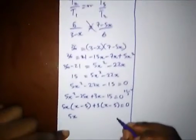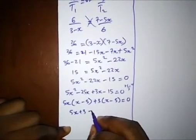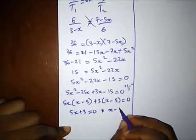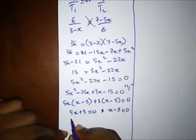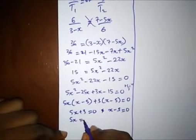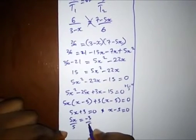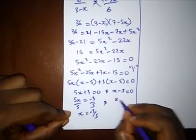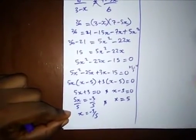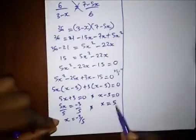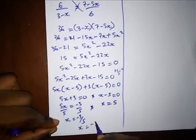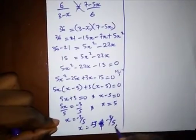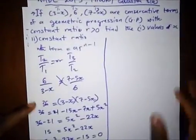So we have (5x plus 3) equals 0 and (x minus 5) equals 0. From 5x plus 3 equals 0, x equals minus 3 over 5. So the values of x are x equals 5 or x equals minus 3 over 5. This is the answer for the first part.